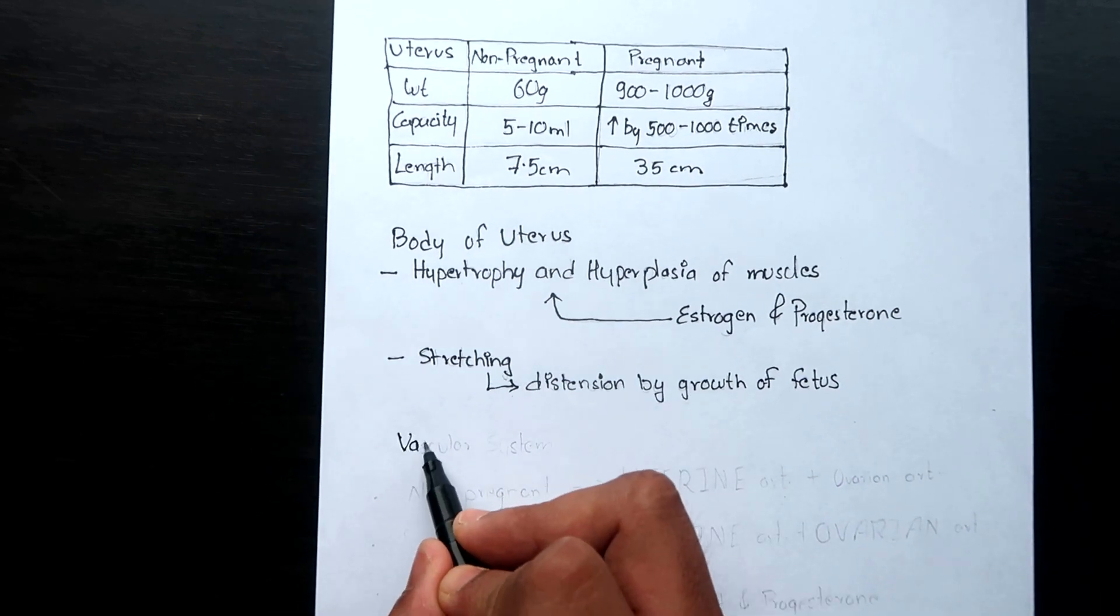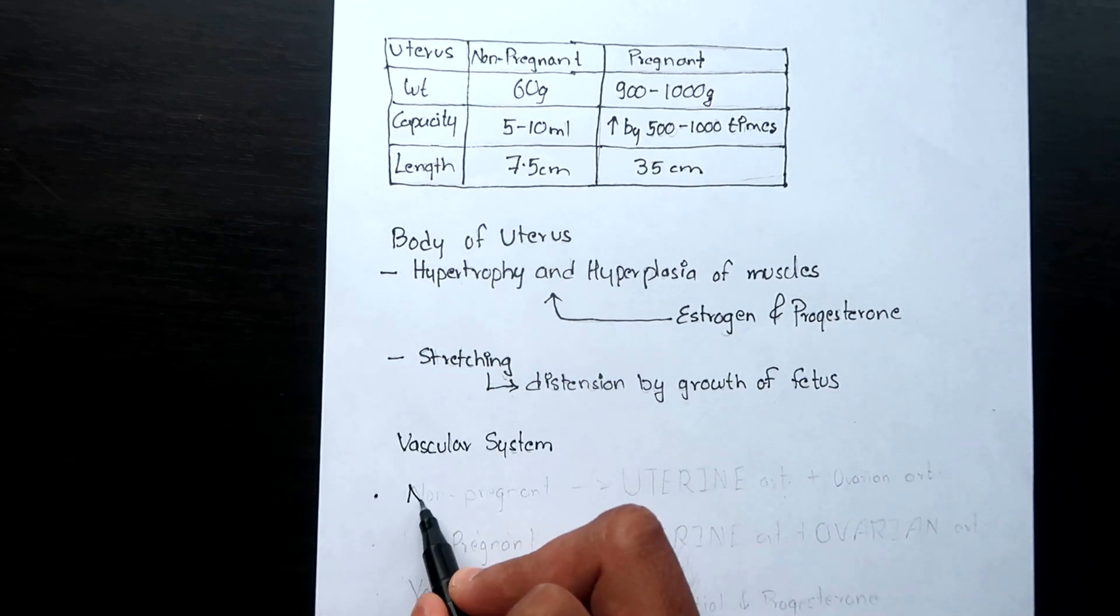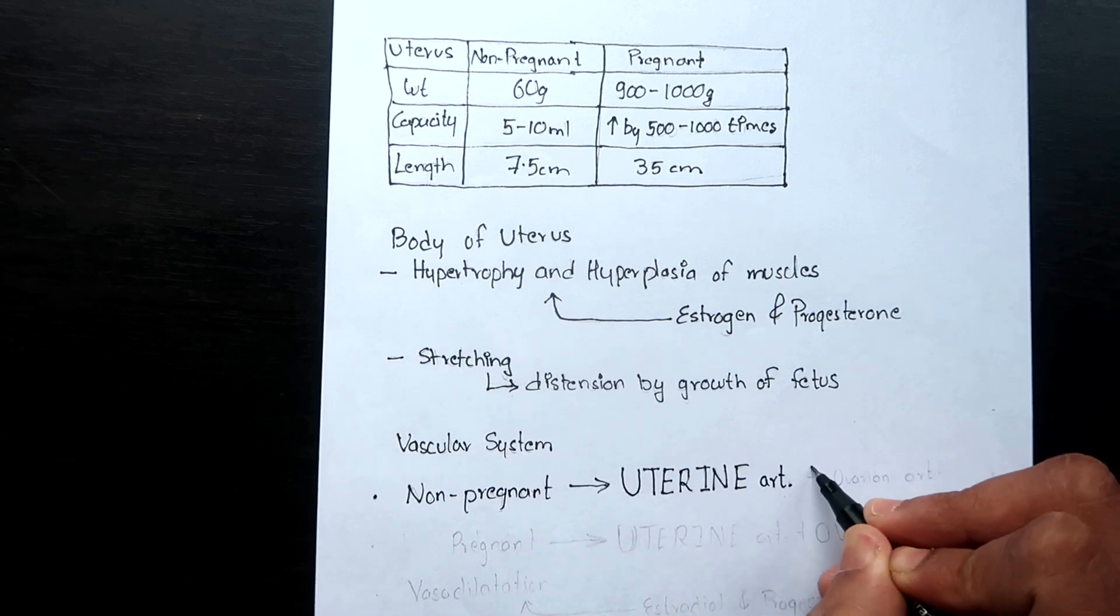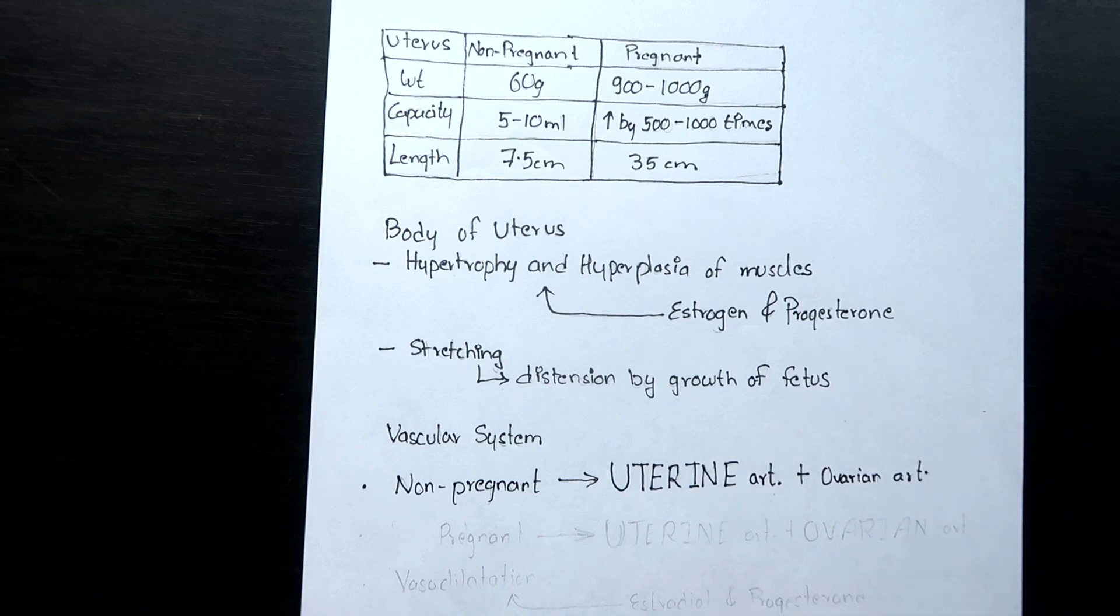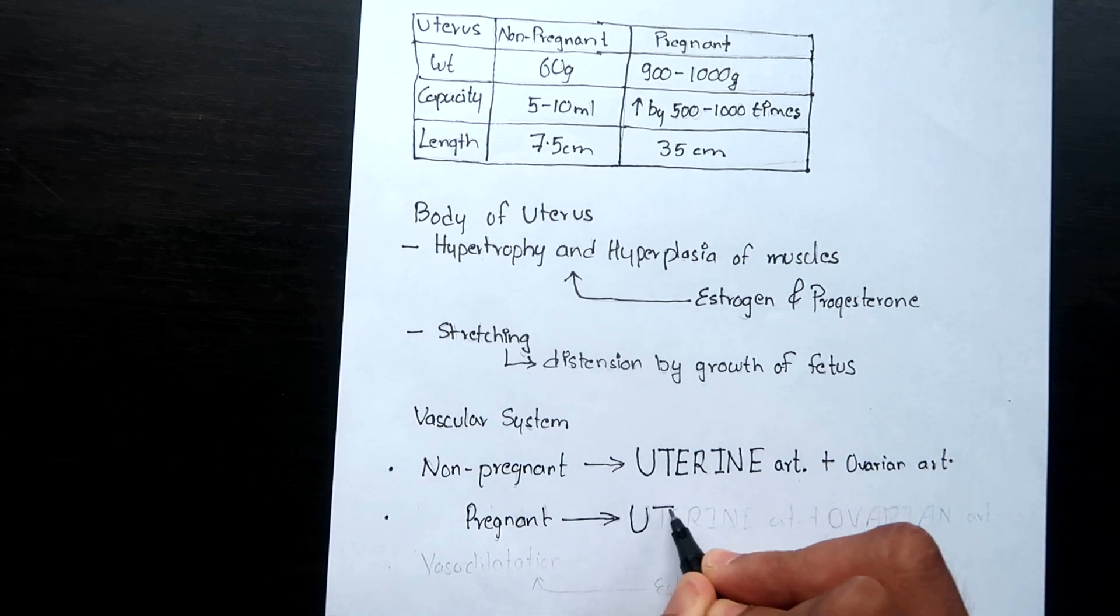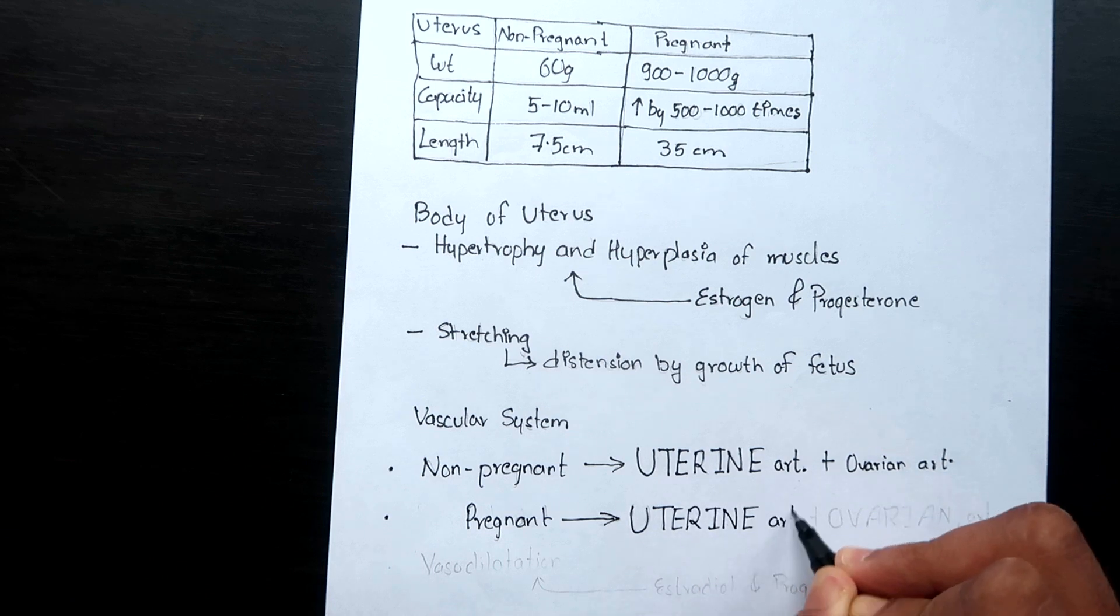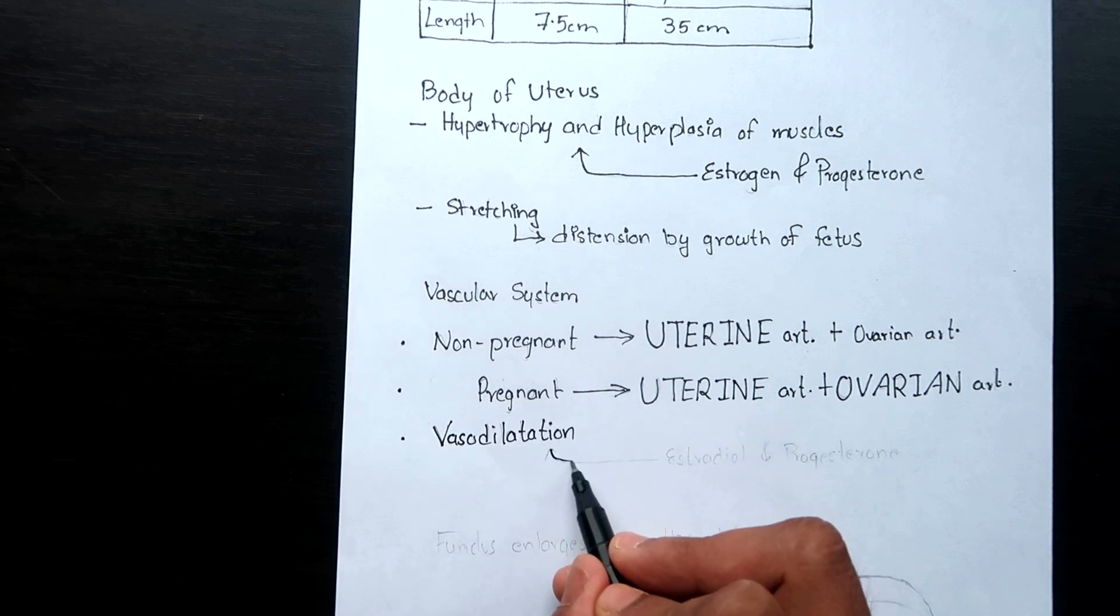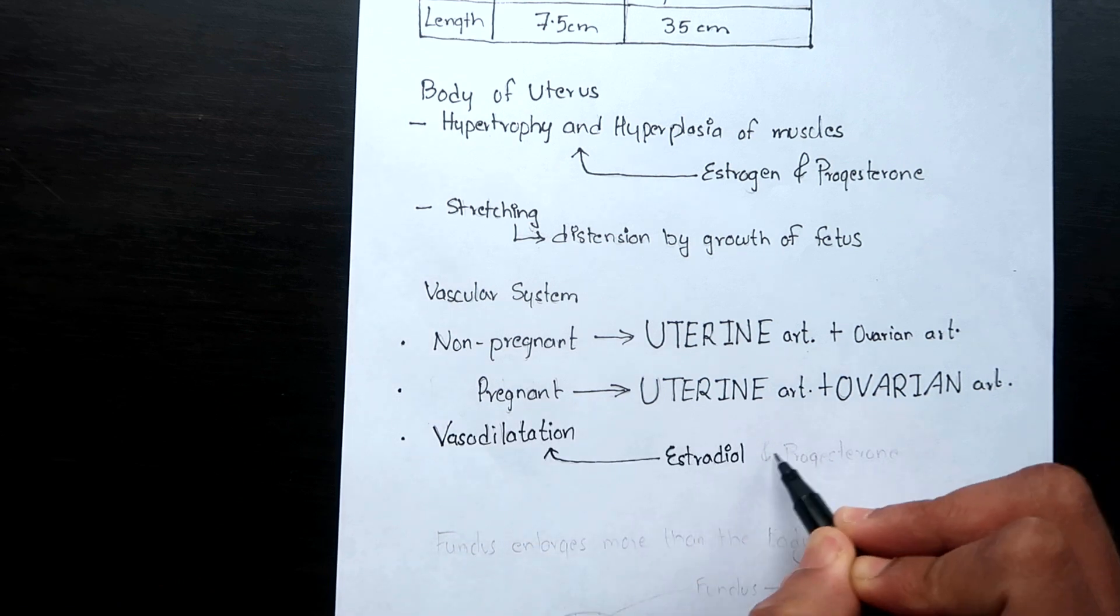Coming to the vascular supply of the uterus. In the non-pregnant state the blood supply to the uterus is mainly through the uterine artery and least through the ovarian artery. But in the pregnant state the ovarian artery carries as much blood as the uterine artery. There is vasodilation which is mainly due to estradiol and progesterone hormones.